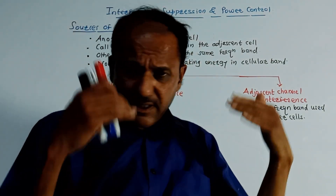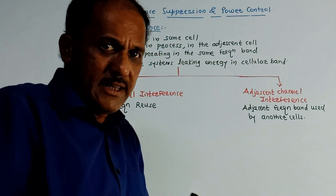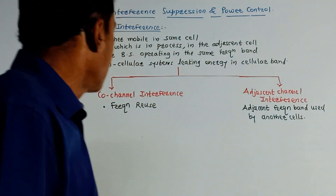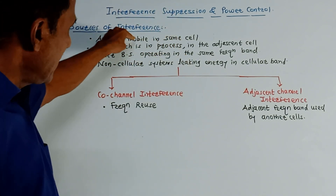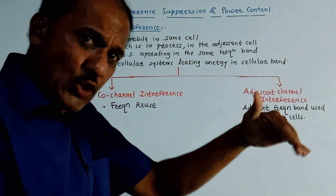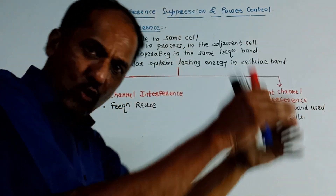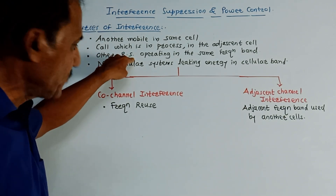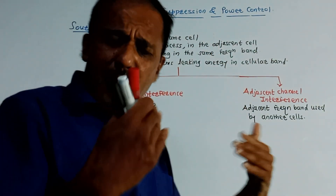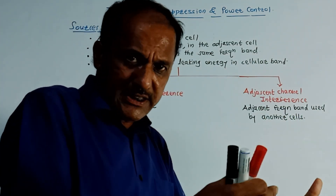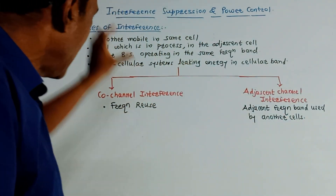What are the sources of interference? Interference means some adjacent channels are causing mixing of signals in the existing system. In a cellular system, another mobile in the same cell may cause interference, or a call in progress in an adjacent cell can also cause interference. Another base station (BS) operating in the same frequency band can produce interference. Also, a non-cellular system leaking energy into the cellular band can cause interference.